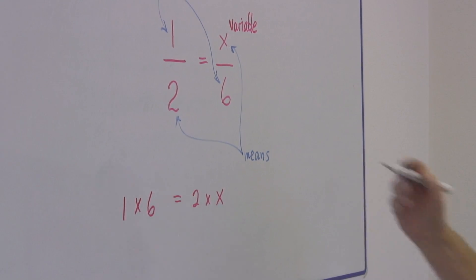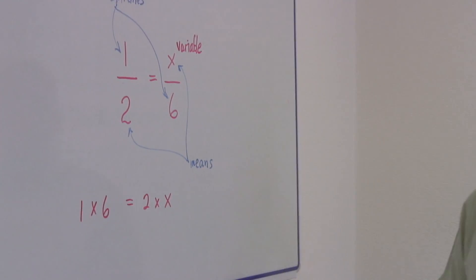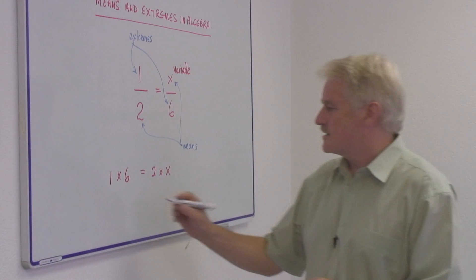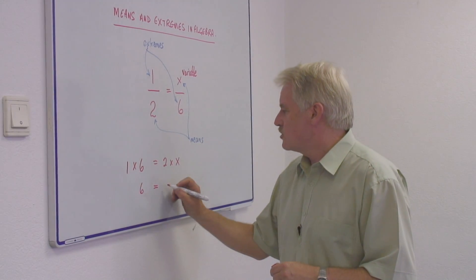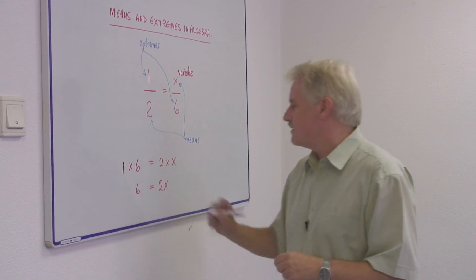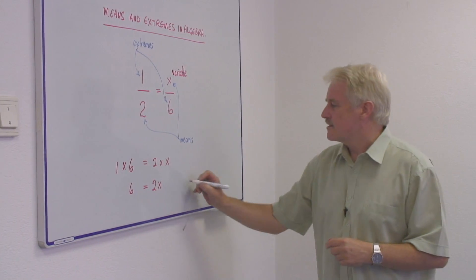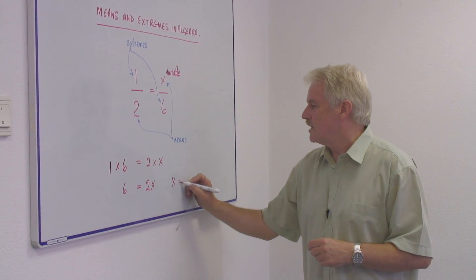So the solution to this, of course, 1 times 6 is 6. We write 2 times x is 2x. So 2x is 6, and x therefore is 3.